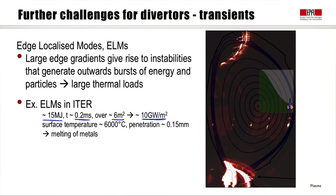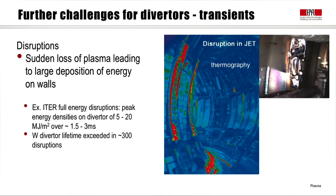Even for materials like tungsten, the surface temperature will rise to about 6,000 degrees over a layer of about 0.1–0.2 millimeters. That means the metals will melt — something we must avoid.